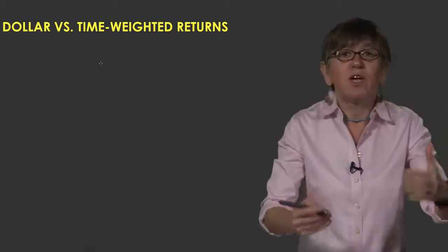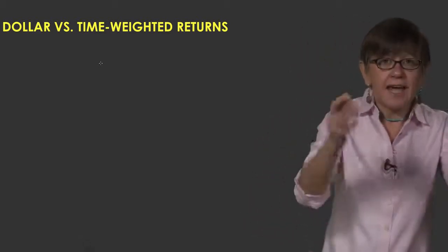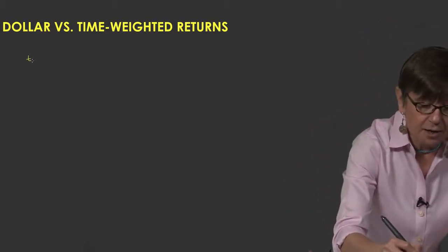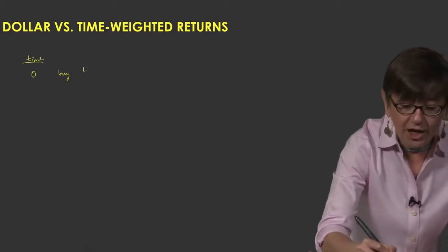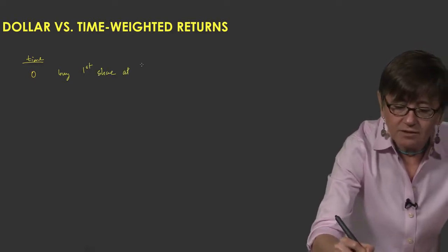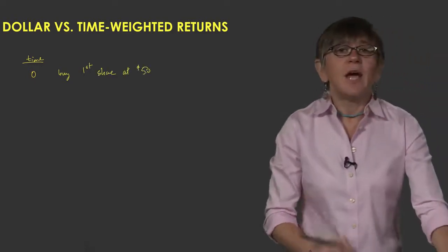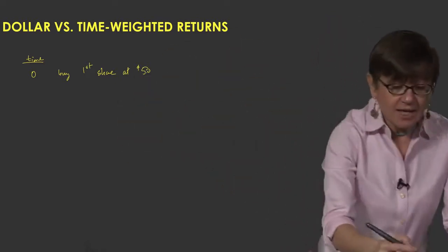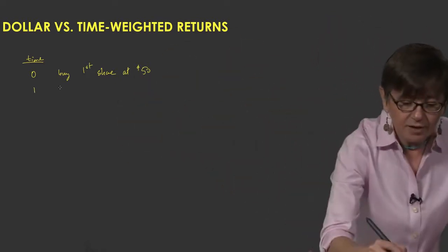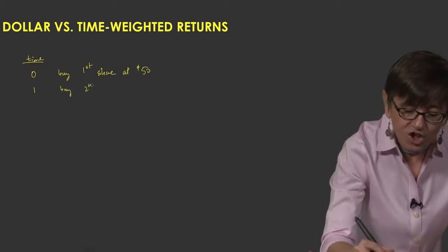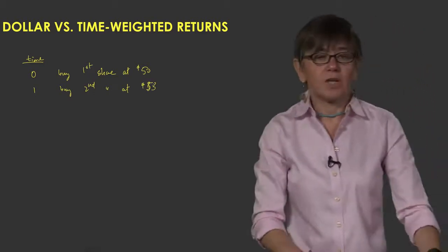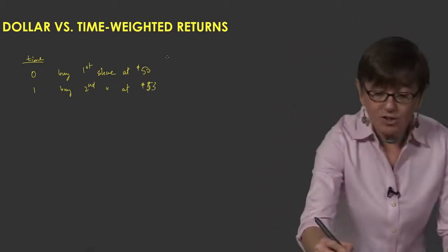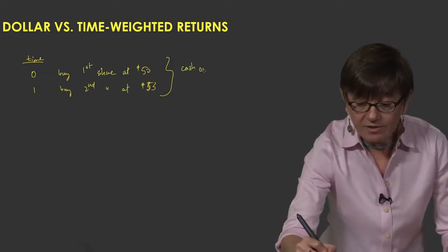Let's do an example. Suppose you buy a share of stock at time zero at $50. So at time zero you buy your first share at $50. And then you buy another share a year later — a second share at $53. You can think of these as your cash outlays.